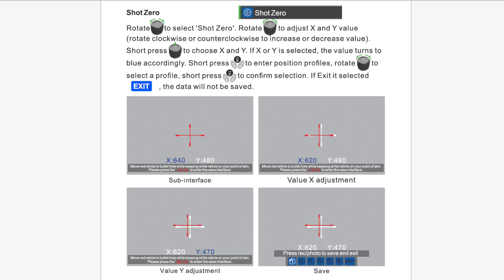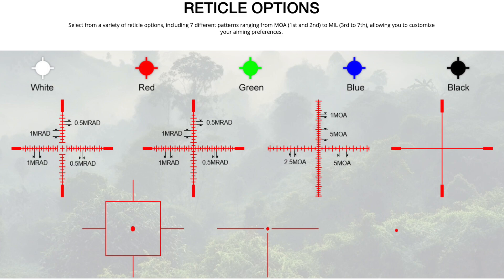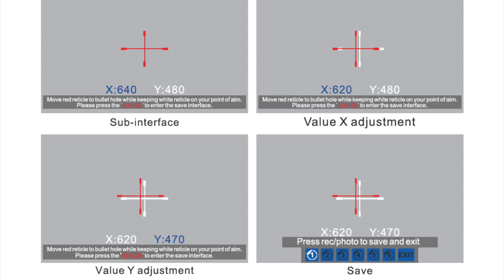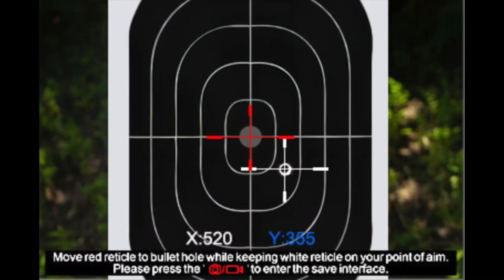These are the instructions for zeroing the six different reticle profiles. I think it's worth mentioning here that I've used a few different zeroing systems, including some of the big names in digital and thermal. And this system is by far the easiest that I've used.